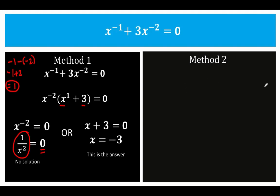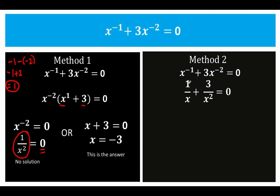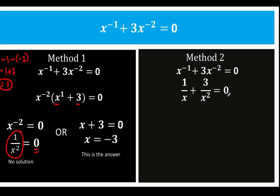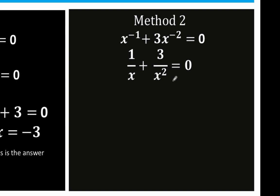Now let's compare this with method number 2. In method number 2, we begin again with the given equation. But instead of factoring, we are going to rewrite x raised to negative 1 with a positive exponent — same with 3x raised to negative 2. So x raised to negative 1 is just 1 over x, and 3 times x raised to negative 2 is just 3 over x raised to positive 2. Then copy equals 0. We now have a rational equation.